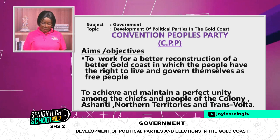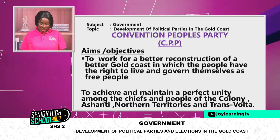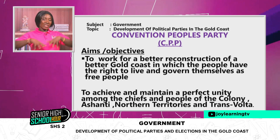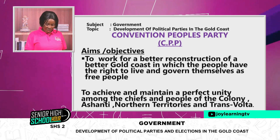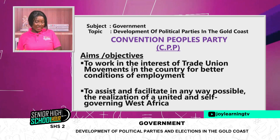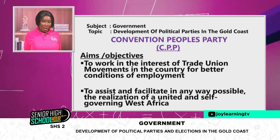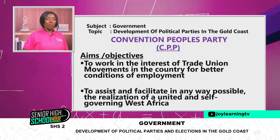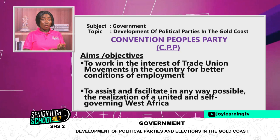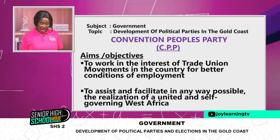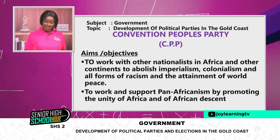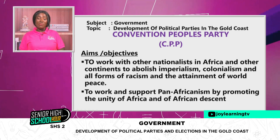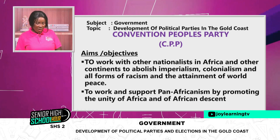Another aim was to achieve and maintain perfect unity among the chiefs and people of the Colony, Ashanti, Northern Territories, and Transvolta — to put all peoples within what is now Ghana together. To work in the interest of trade union movements for better conditions of service. And to assist in the realization of a united and self-governing West Africa.